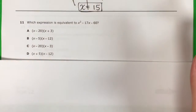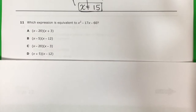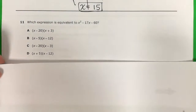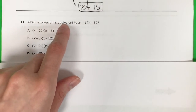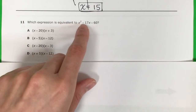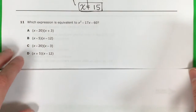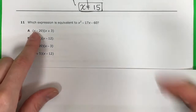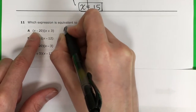Number 11. I'm going to show you two ways to do number 11. The first way will be the long way. They said which expression is equivalent to x squared minus 17x minus 60. I'm going to have to do these one by one. So let's go ahead and do A.